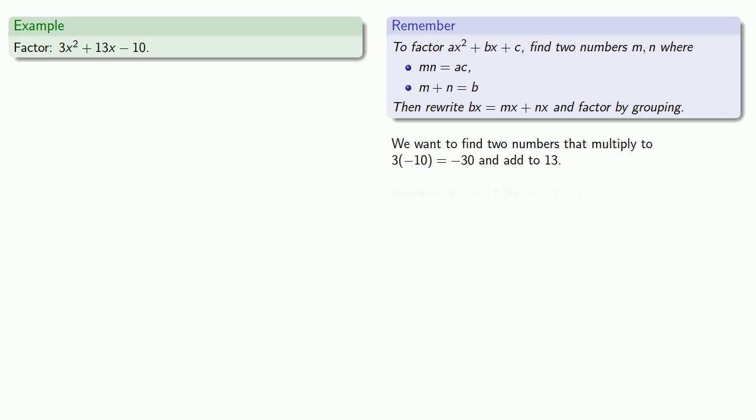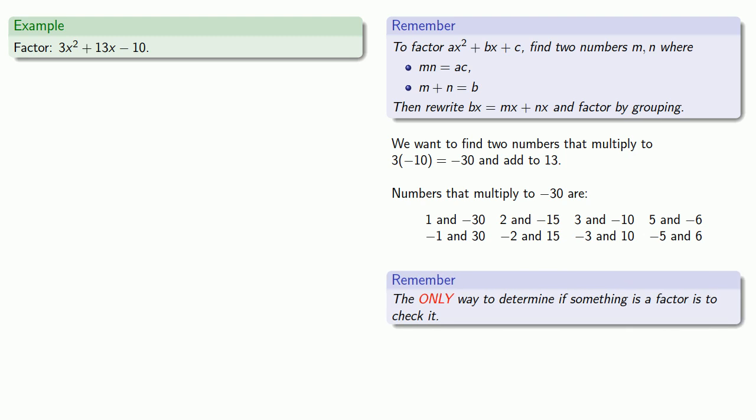So let's find numbers that multiply to -30. Well that's quite a few numbers, and so you might wonder, which one's the right one? And here's the important thing to remember, the only way to determine if something is a factor is to check it. We don't know in advance which one of these will work. We have to check all of them until we find something that does, or determine that nothing works.